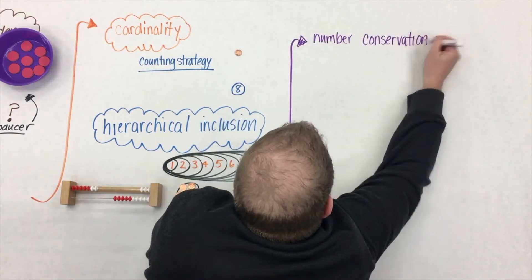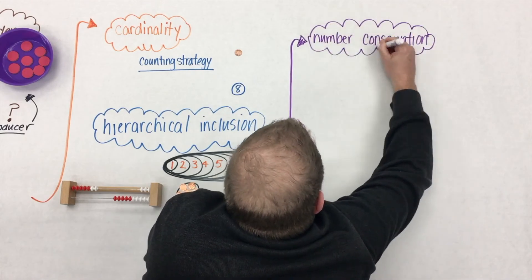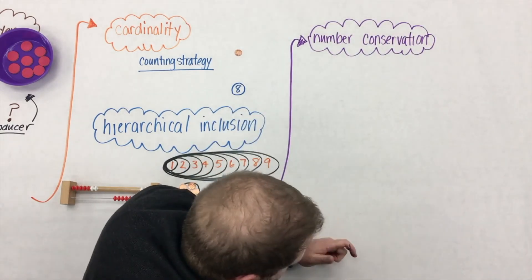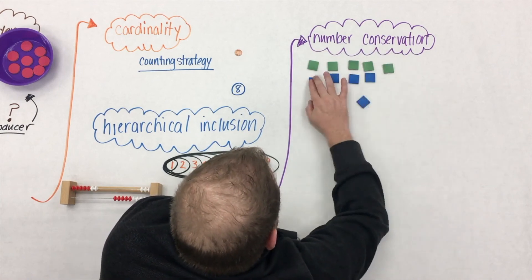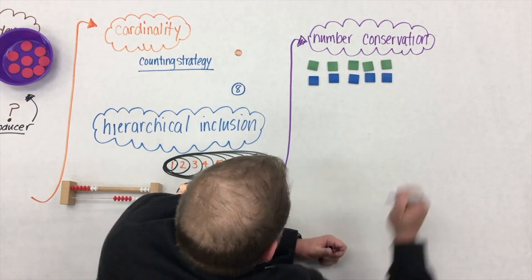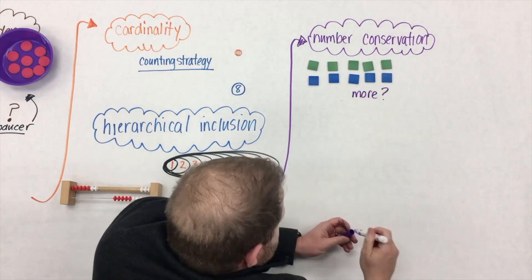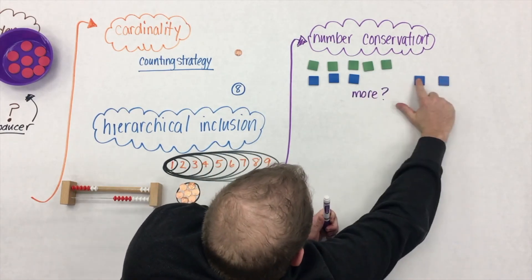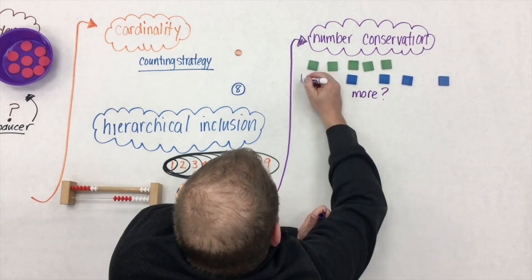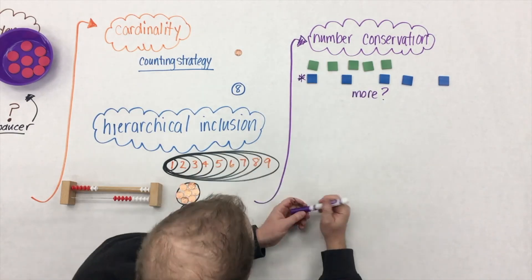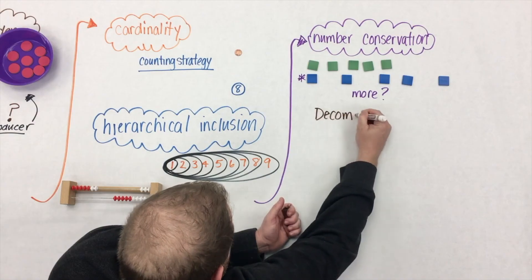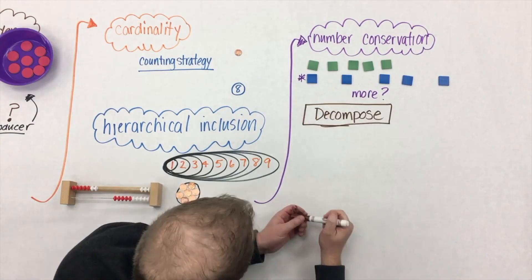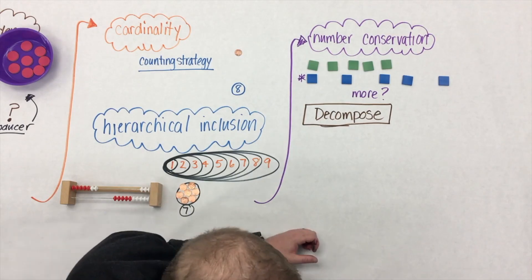And at the final part of this progression of early numbering and counting comes number conservation. The big idea here is that students understand that there's a decomposition of number. We might ask, are they the same? Students would say, yeah, we have the same number. But if we stretch out the blue row and ask which one has more, students might say the blue. This is at the heart of number conservation. It's about decomposition, that numbers can be broken apart.